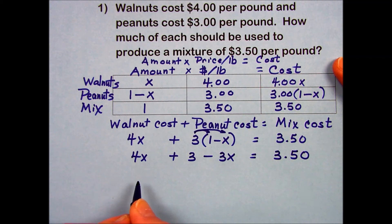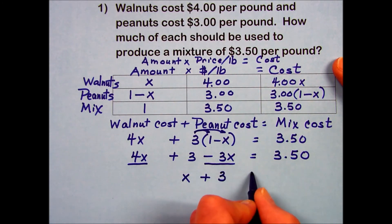Simplifying next, combining any like terms. I have a 4x minus 3x, which simplifies to a 1x, or just simply x, and I still have the plus 3 is equal to $3.50.